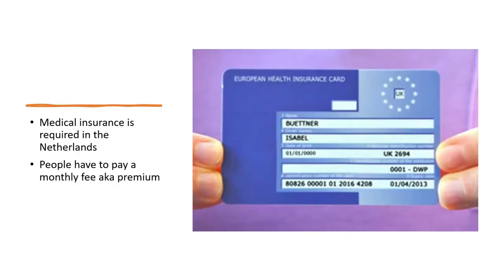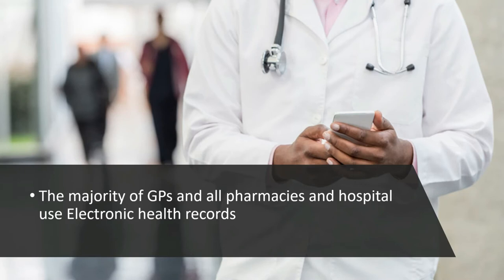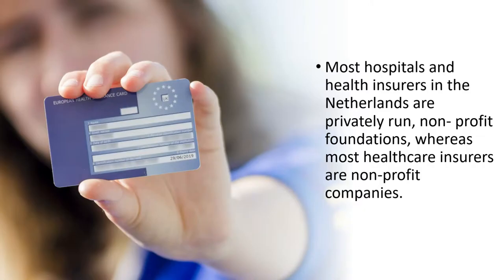Medical insurance is required in the Netherlands — people pay a monthly fee known as a premium. The majority of GPs and all pharmacies and hospitals use electronic health records. Most hospitals in the Netherlands are privately run non-profit foundations, whereas most healthcare insurers are non-profit companies.